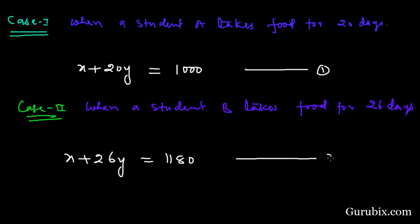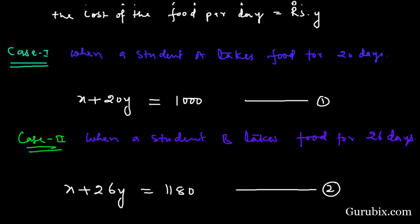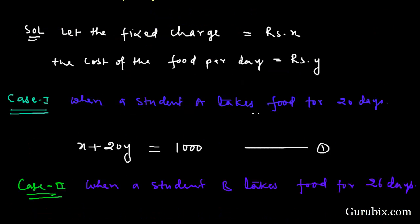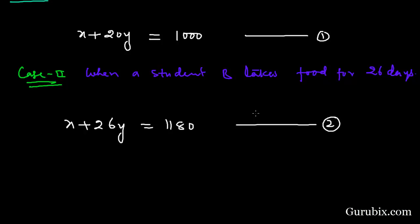We have been directed to find the solution of the pair of linear equations by any algebraic method. There are three algebraic methods: first is elimination, second is substitution method, and third is cross multiplication method. We shall apply the elimination method here. In the elimination method, we first make the coefficient of any one of the two variables equal.